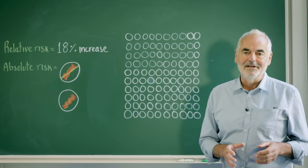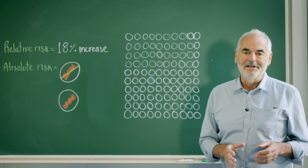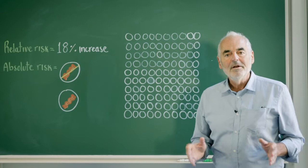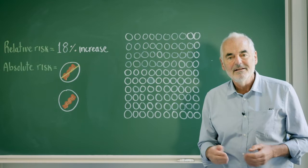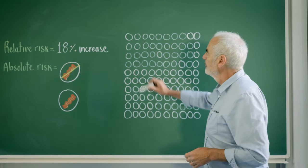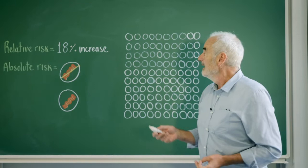One of their findings was that 50 grams of extra processed meat a day, that's around about a bacon sandwich, was linked to an 18% increase in the risk of getting bowel cancer during your lifetime. Now we cannot interpret that relative risk without knowing 18% of what?